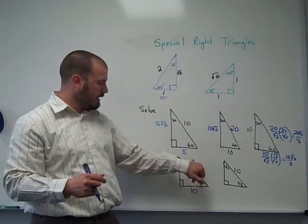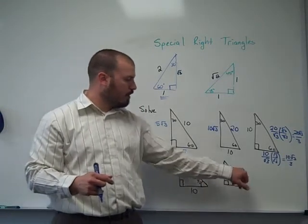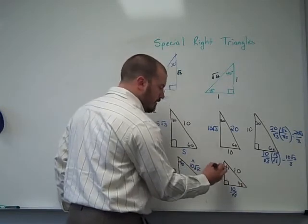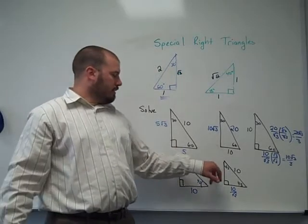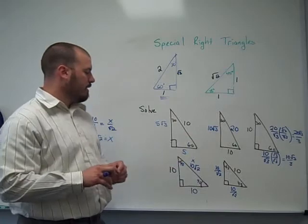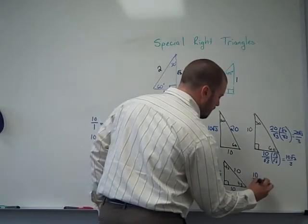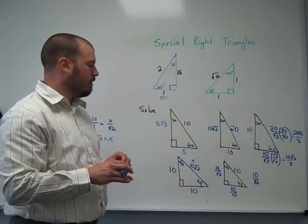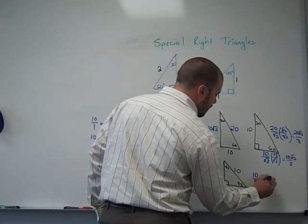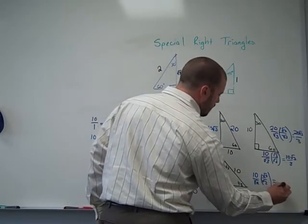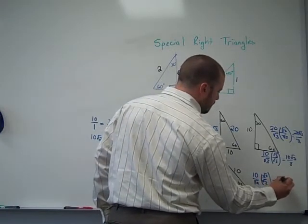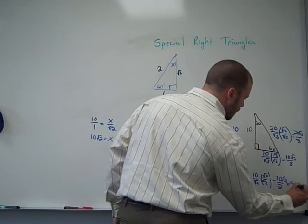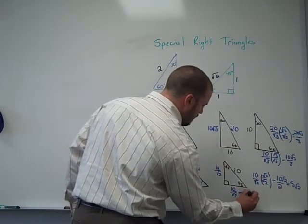When what we know is the hypotenuse, we go in reverse — take 10 and divide by √2 to get each leg. Both legs equal 10/√2. To rationalize, multiply by √2/√2. Root 2 times root 2 is 2, and 10 times √2 is 10√2, giving 10√2/2. This simplifies further: 10 divided by 2 is 5, so each leg is 5√2.